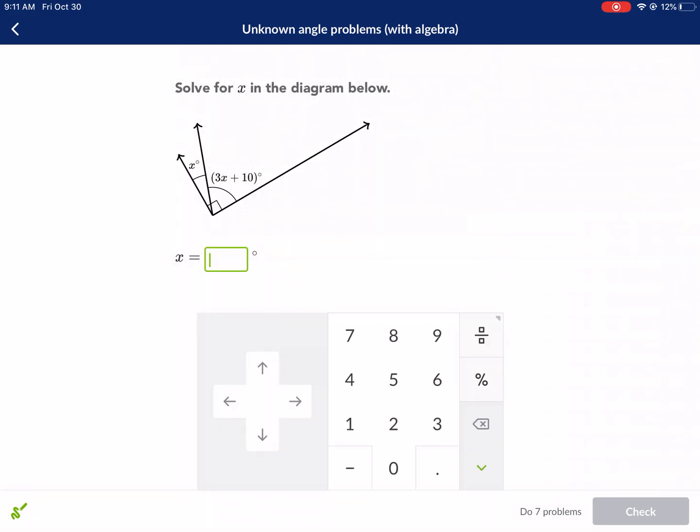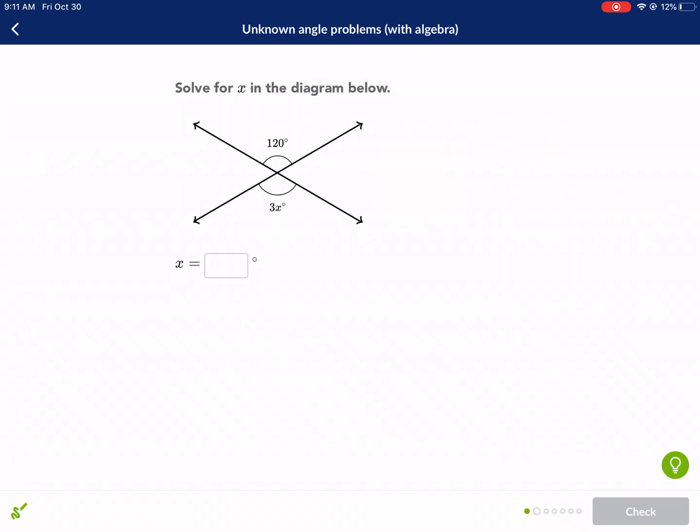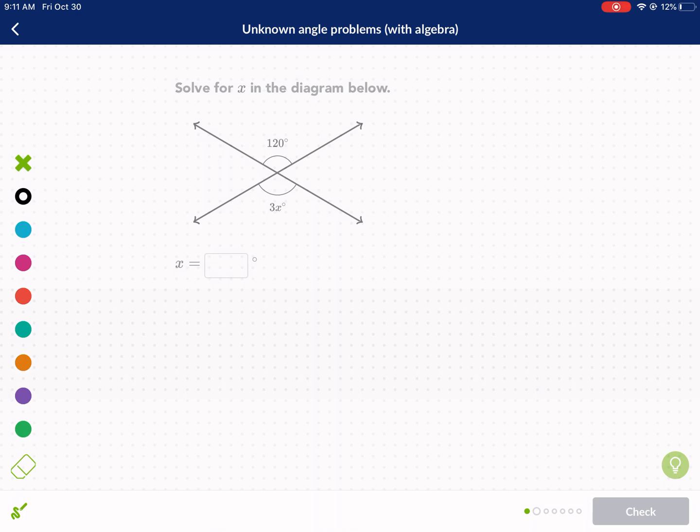Again, if I'm going fast, go ahead and pause, rewind, copy it down, but we're on a roll here. Solve for X in the diagram below. This is another geometry concept. We have something called vertical angles. Their sides are opposite rays. I like to think of it as they're across from each other and they share the same lines on both sides. So these are vertical angles. That means they are equal.